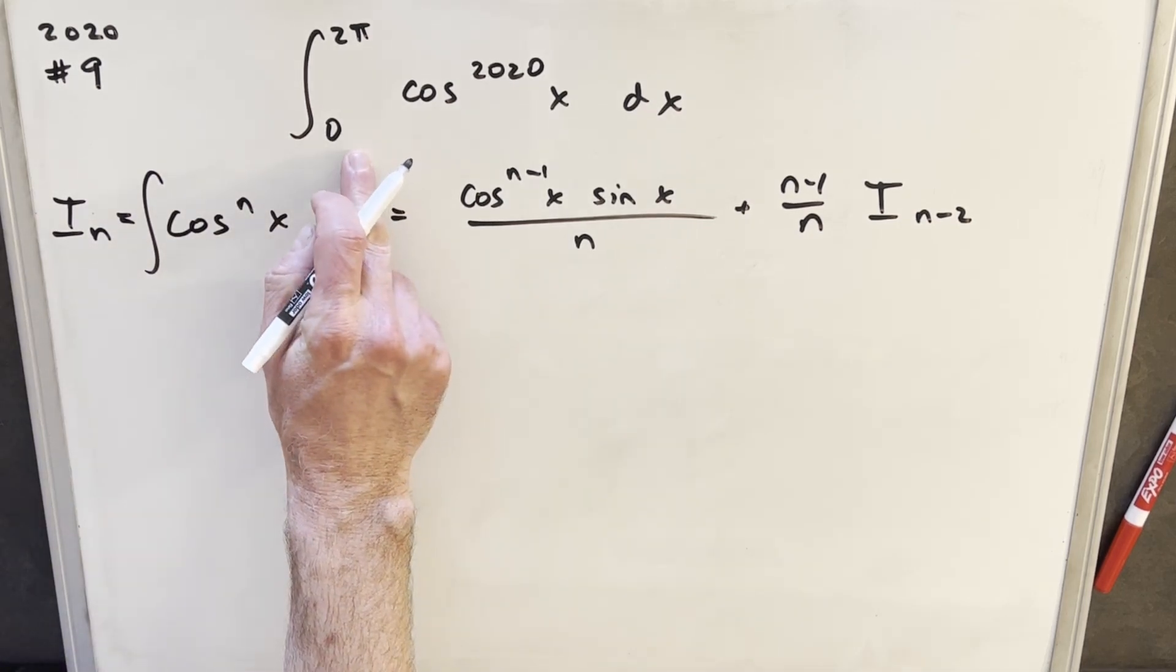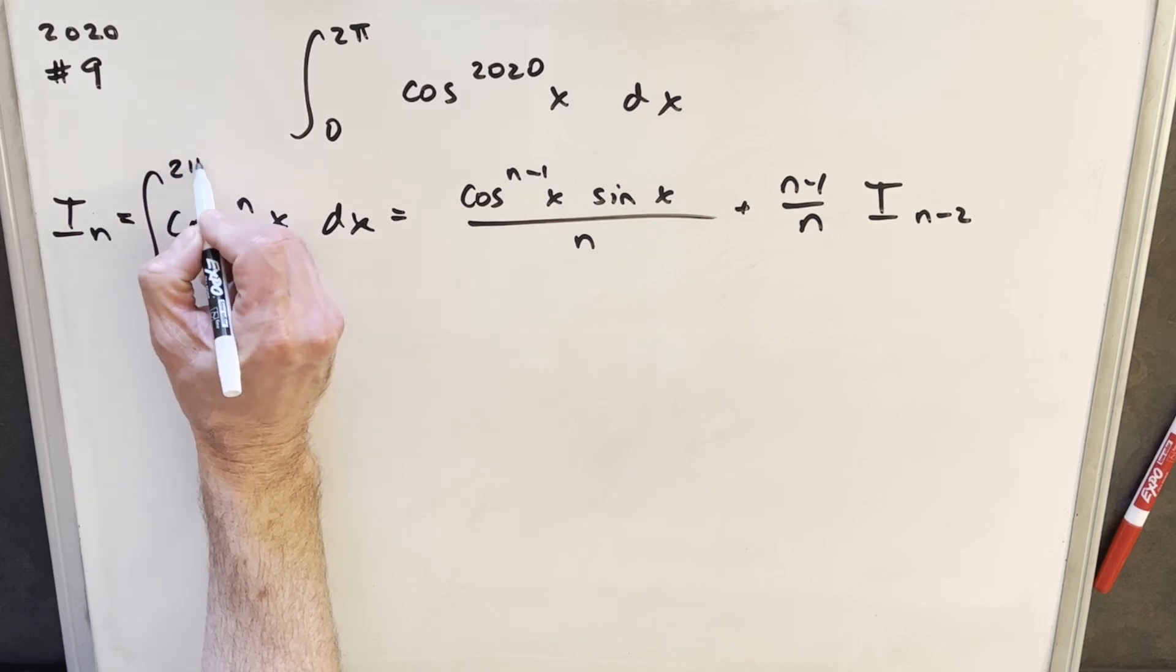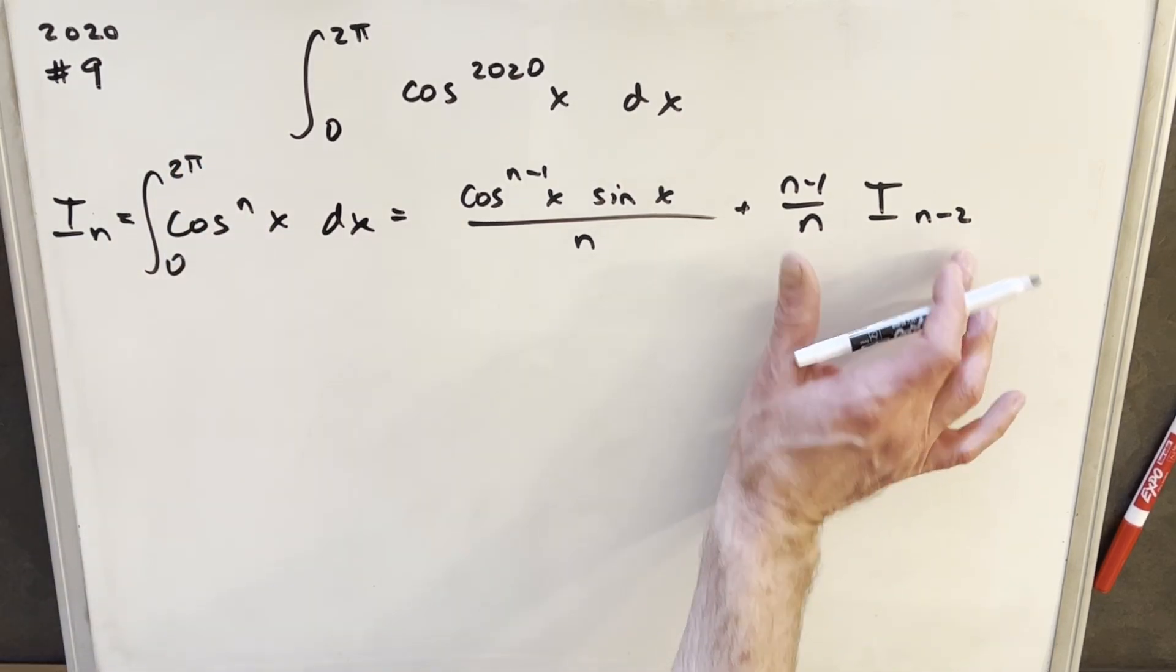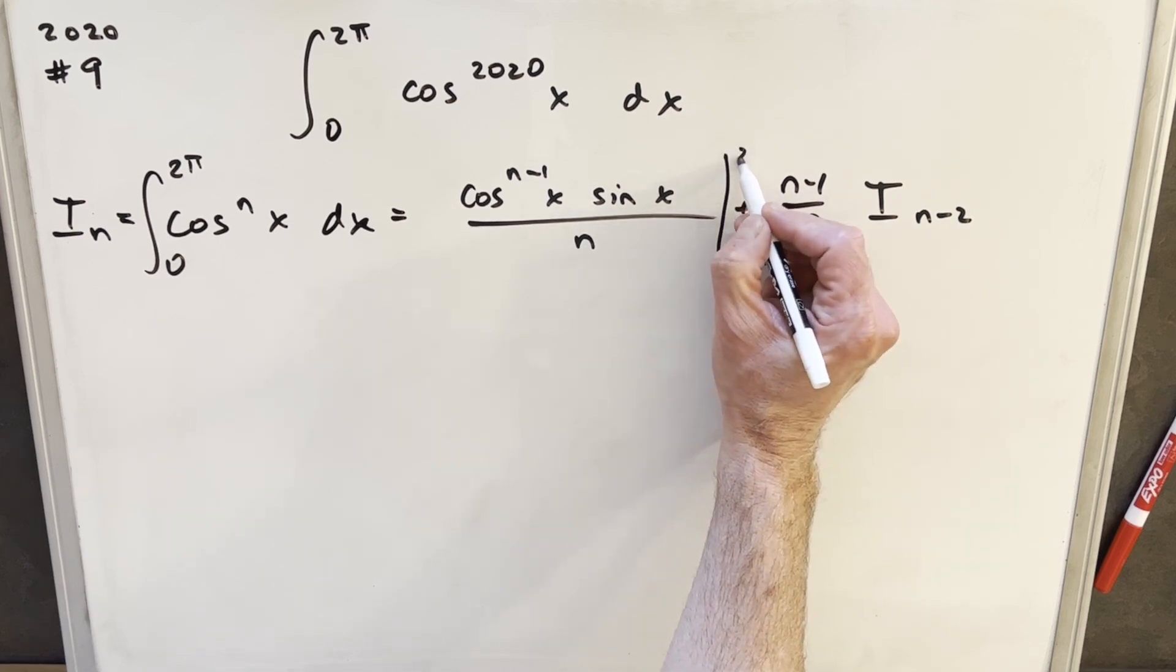Okay, so we look at our bounds. We know we're dealing with a bound of 0 to 2 pi. So if we think about evaluating this, we're still going to have an integral here so we won't worry about this part. But this part is going to be evaluated from 0 to 2 pi.